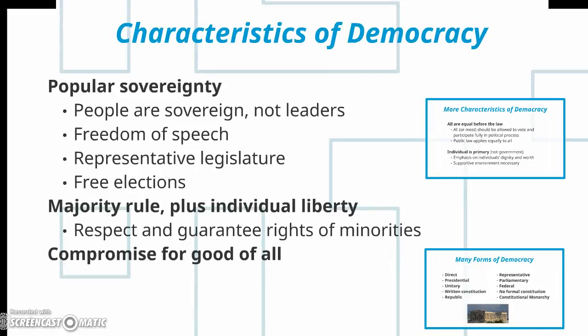One form of government — the government that we're most experienced with — is democracy. Some characteristics of democracy are that it's based on the concept of popular sovereignty. People are sovereign, not leaders. In Great Britain, the queen is sovereign, but in the United States it's the citizen — the people — who are sovereign. That's a different form of government.